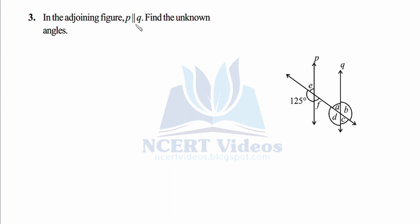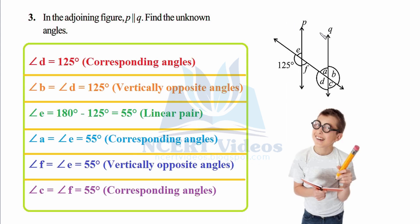Question three: in the adjoining figure, p is parallel to q. Find the unknown angles. Since p is parallel to q, always use this statement — only consider lines parallel if it is given. The angle 125° is given. Using corresponding angles, angle d equals 125° directly. Then, since d and b are vertically opposite (X-formation), b also equals 125°. For angle e, using the linear pair property: 180° minus 125° gives 55°.